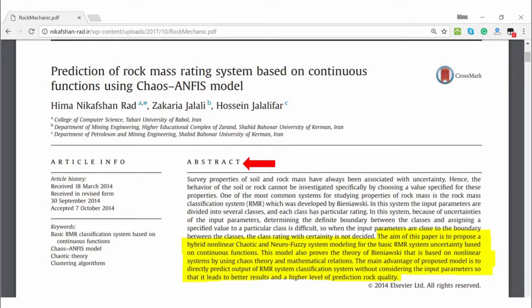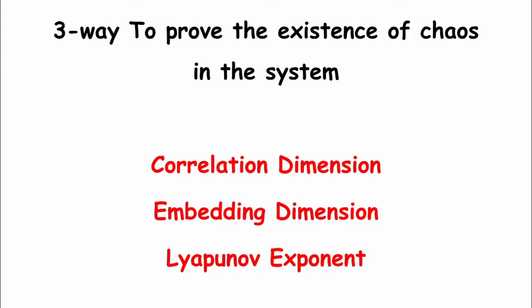This model also proves the theory of Benjavitsky, which is based on a non-linear system, using case theory and mathematical relations. The main advantage of the proposed model is to directly predict the RMR system classification without considering all input parameters separately, leading to better results and a higher level of prediction quality. With every case there is an order — this idea is the main base of case theory, which studies unstable behavior of non-periodic oscillatory non-linear systems. Chaotic processes are deterministic inherently; instability, non-periodic behavior, and non-linearity together define a chaotic system. Chaos is a non-linear behavior in the range between oscillatory behavior and random behavior.